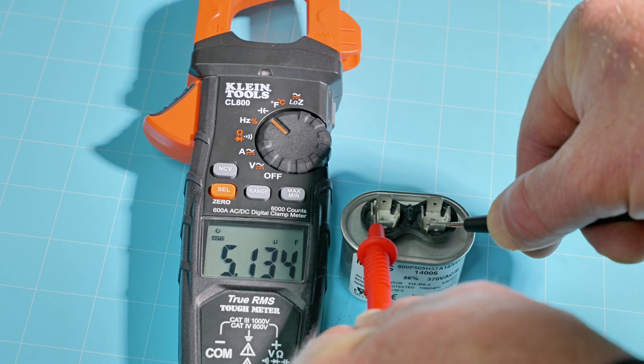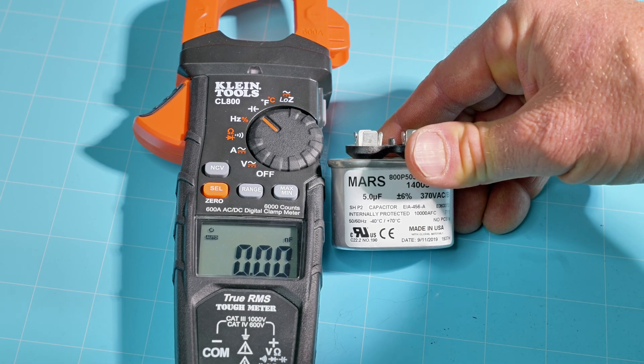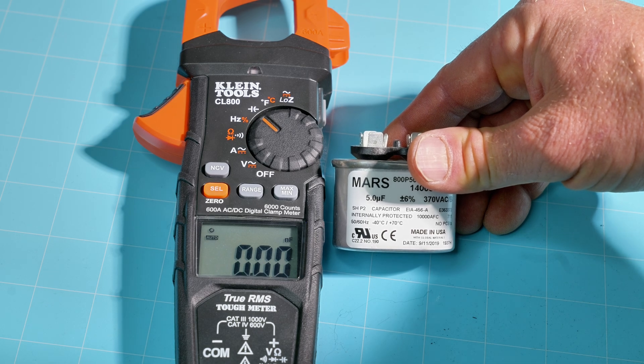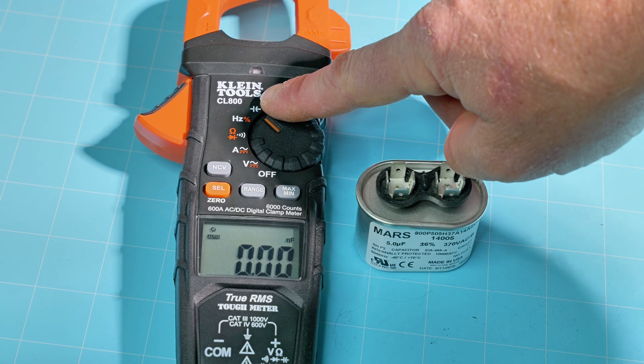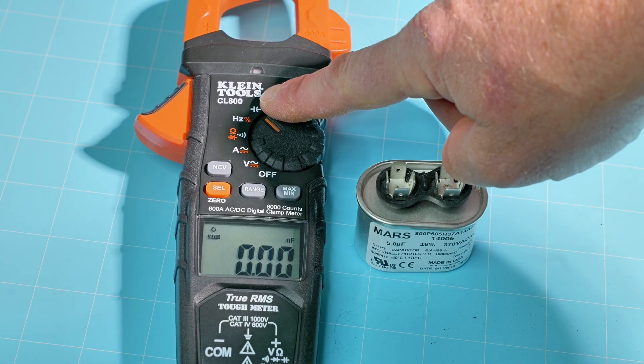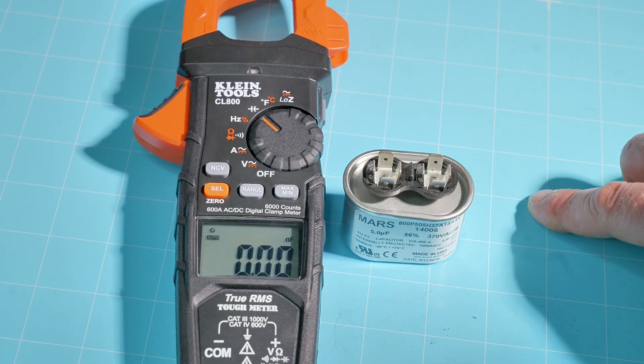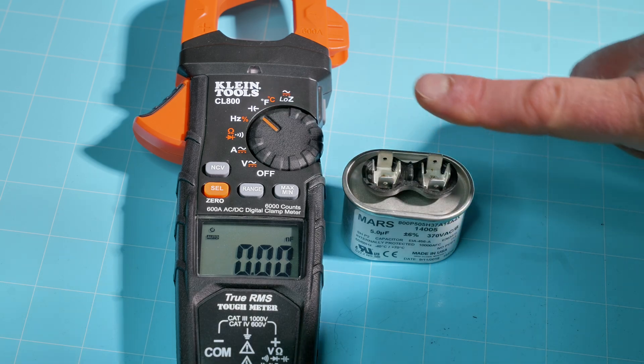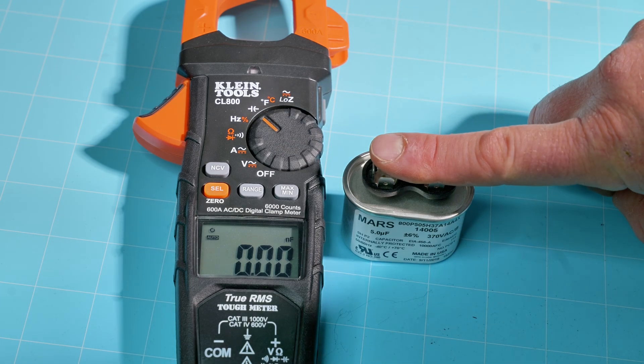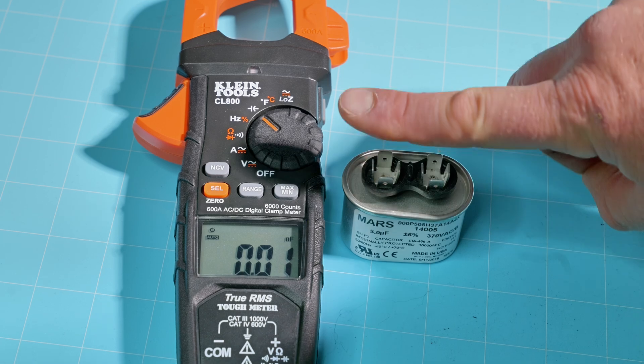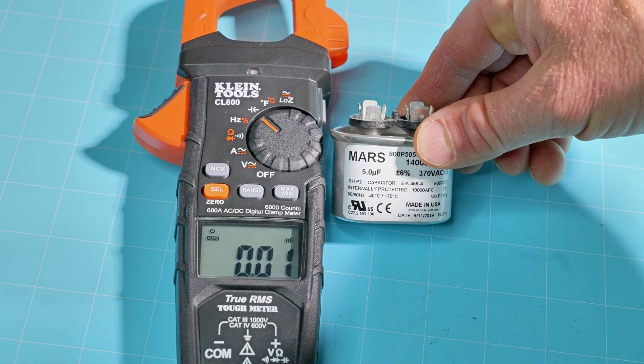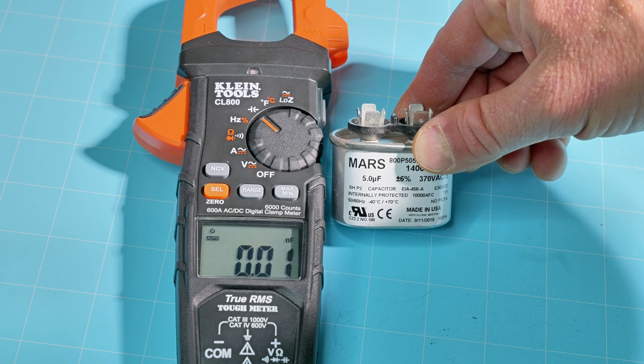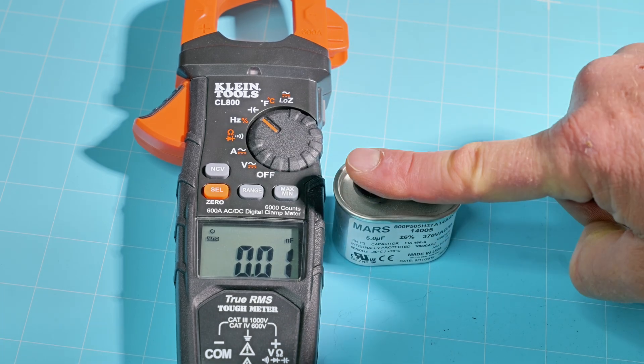I'll show you another capacitor to show you how easy these are to check. We're getting 5.134 there. So we do know that this 5 microfarad capacitor is good. This is a very handy feature on the Klein CL800. Just remember in a live situation to always use an insulated screwdriver using the metal contact across your two terminals before testing because capacitors are temporary batteries that do store electricity. So be very careful when testing these.